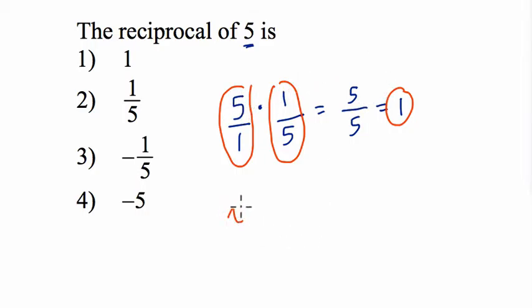In general if you have a number x and you multiply it by 1 over x, well just like with 5 over 1 times 1 over 5, x is really x over 1. So times 1 over x, that still gives you x over x. And x divided by x is 1. These two numbers are also reciprocals of each other.